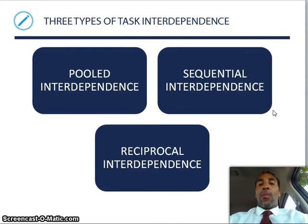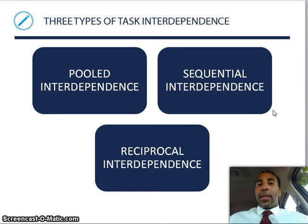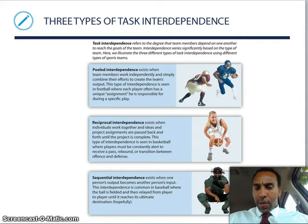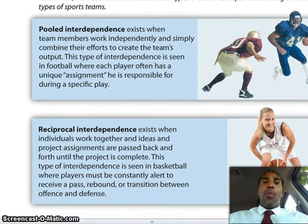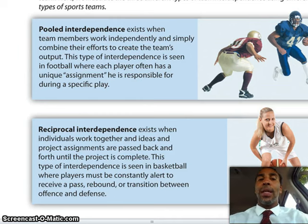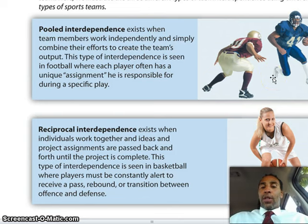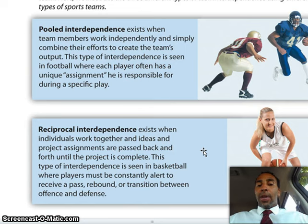The three types of task interdependence: pooled, sequential, and reciprocal. Pooled interdependence exists when team members work independently and simply combine their efforts to create the team's output — seen in football, where each player has a unique assignment for a specific play. Reciprocal interdependence exists when individuals work together and ideas or project assignments are passed back and forth until complete — seen in basketball, where players must constantly be alert to receive a pass, rebound, or transition between offense and defense.